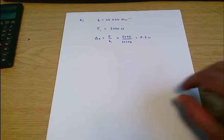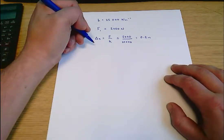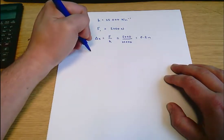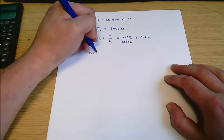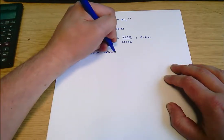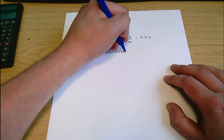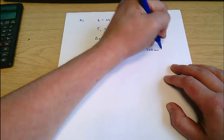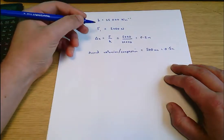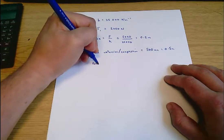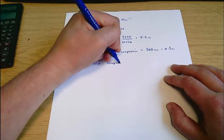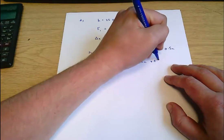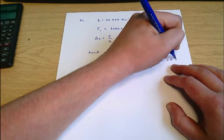We're then told that there is a further loading to compress it an additional distance of 500 millimeters. So second extension or compression, I suppose, is 500 millimeters which equals 0.5 meters. So the total compression equals 0.2 meters at first plus 0.5 meters which equals 0.7 meters.